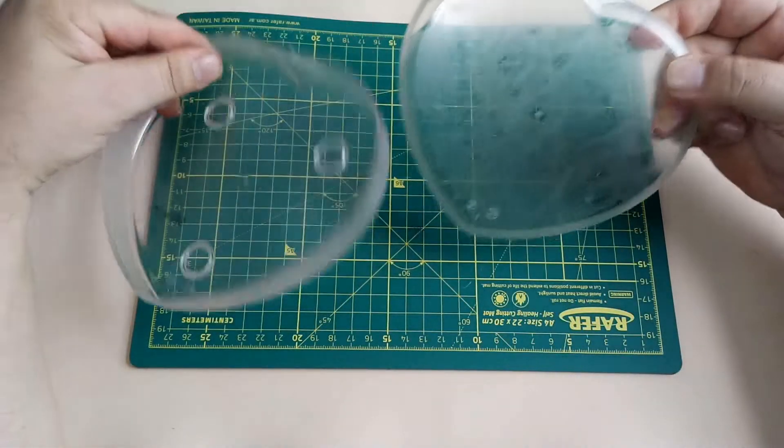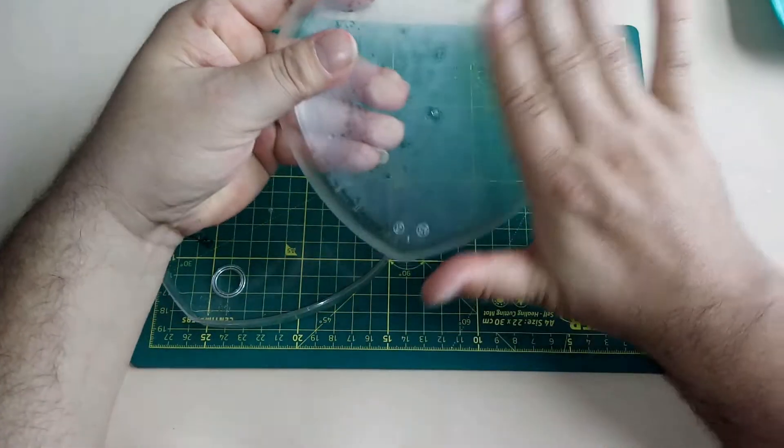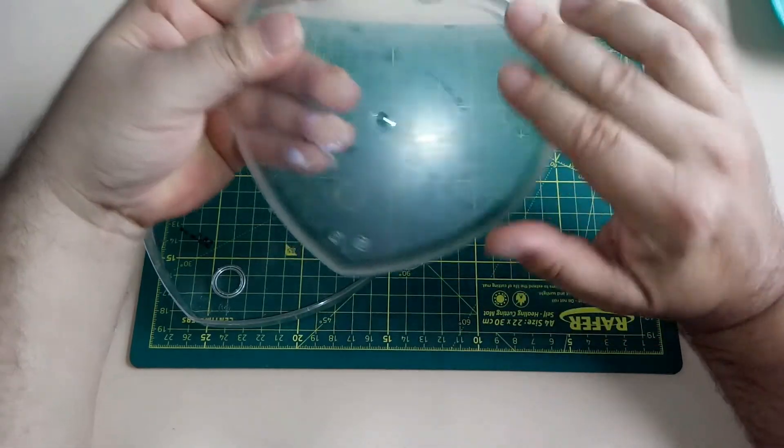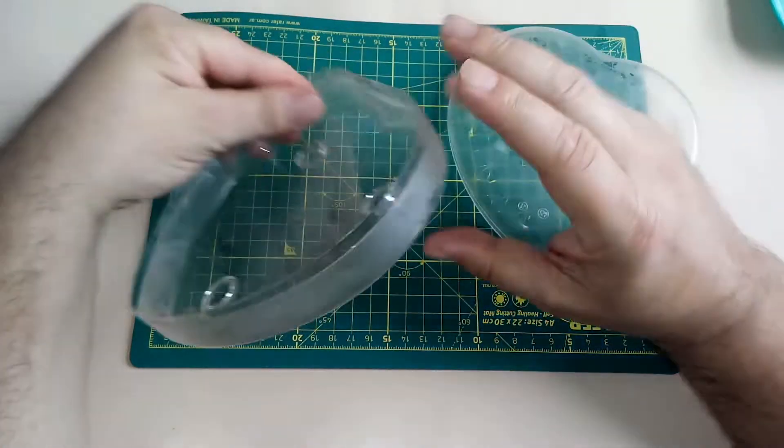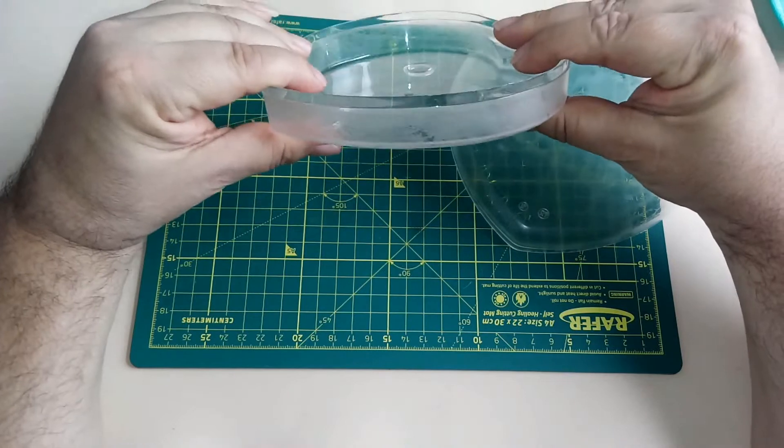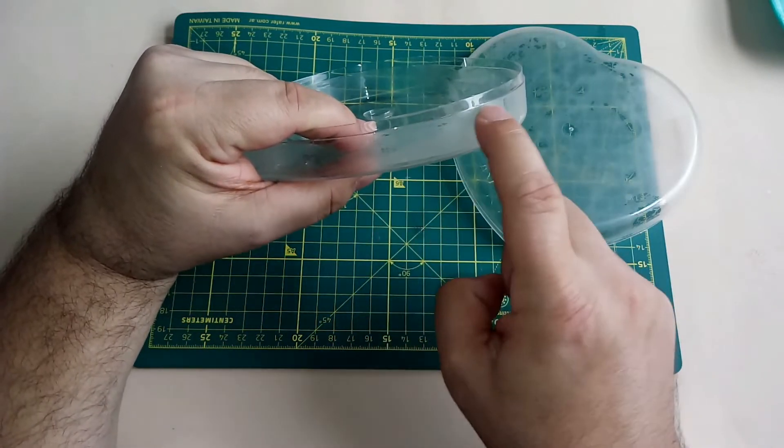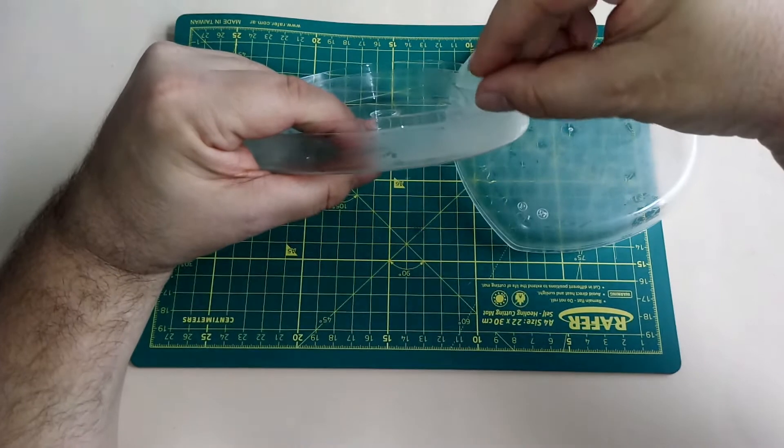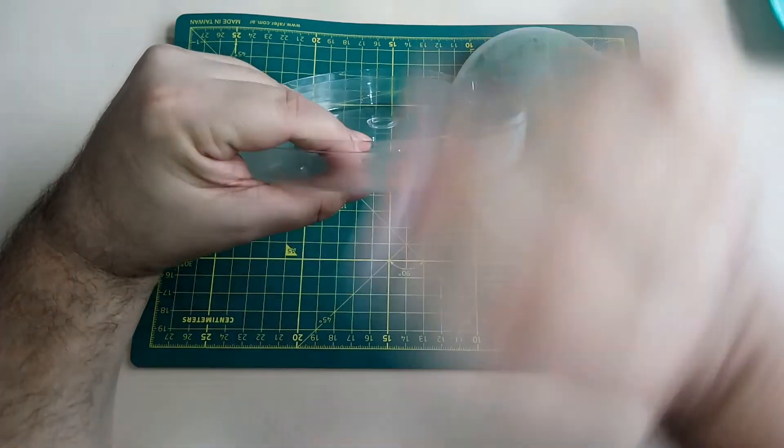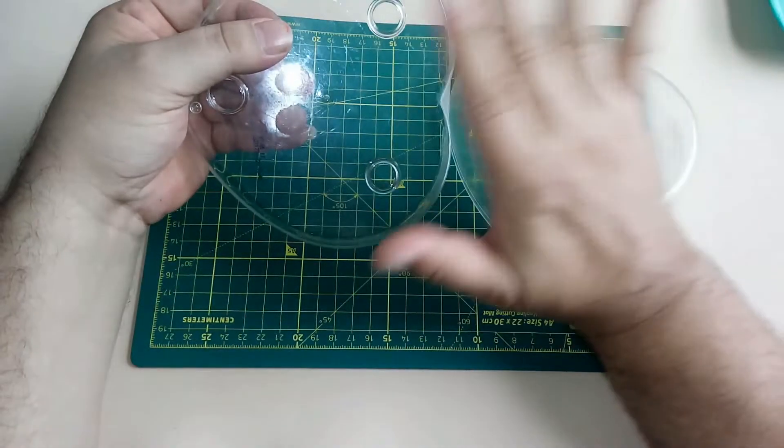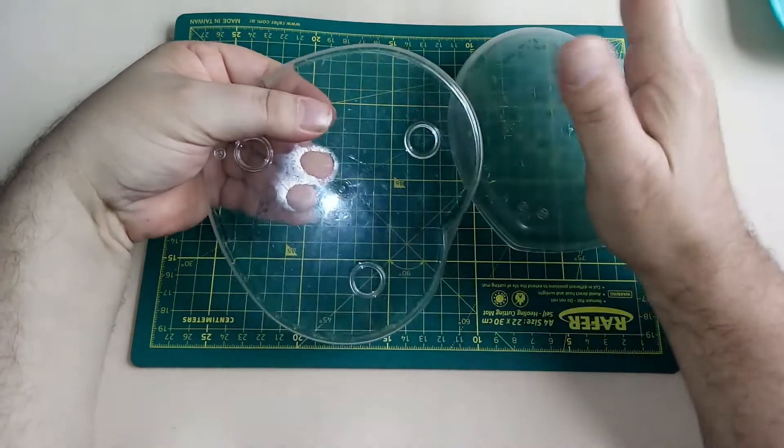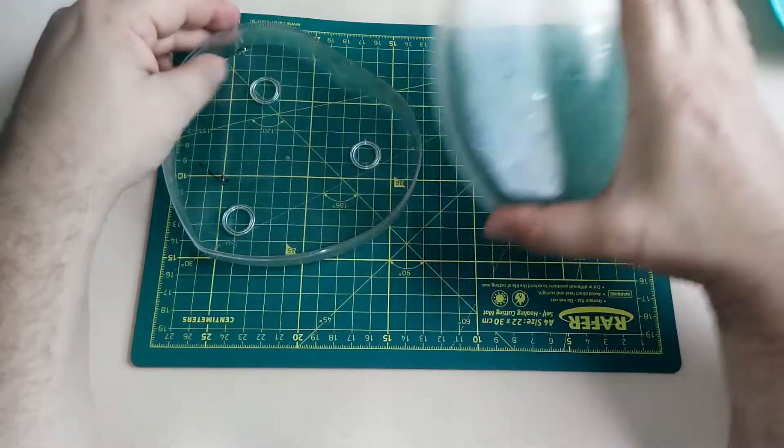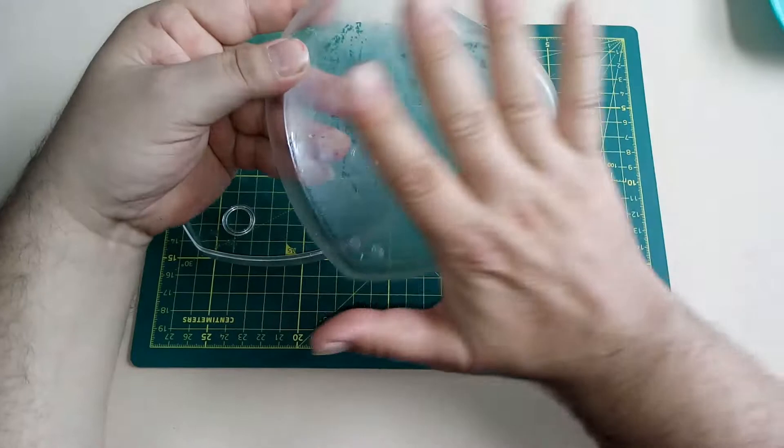Lo primero que yo tengo que hacer es pasar cola vinílica por toda la superficie. En el caso de la base, voy a pasar cola vinílica hasta esta altura. Esta lengüeta que tengo aquí, no. La parte de abajo no me preocupa, no la voy a trabajar. Aplico cola vinílica, dejo secar.